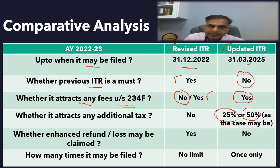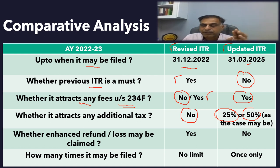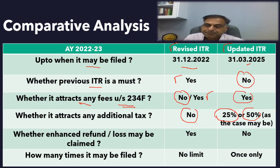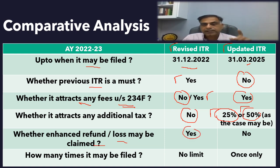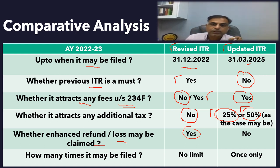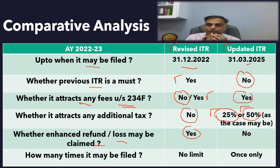Regarding additional tax: while filing a revised return, there is no additional tax liability over and above the tax and interest payable. But for an updated return, either 25% or 50% of the tax plus interest shall be payable as additional tax. Regarding enhanced refund or loss claims: in a revised return, yes, you can enhance your refund or losses. But in an updated return, such a facility is not available, because it is essentially meant to pay the tax liability rather than claiming any refund or enhancing losses.